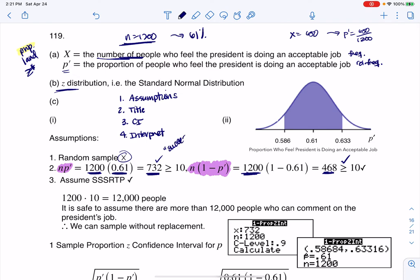Here you basically have a success, and here you have your failures. I put it in quotes because I don't mean it to be success or failure. It's just what we're keeping track of in this problem. So we had 732 successes, 468 failures out of our sample of 1,200. Now, my sample size is small relative to my population, because if I take my sample size and multiply it by 10, I definitely think there's more than 12,000 people who can talk about the president's job. So that allows us to sample without replacement, which is great. So at this point, I've checked my assumptions.